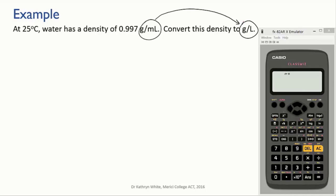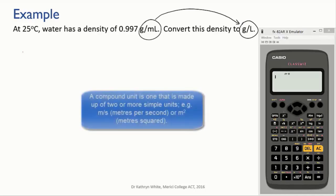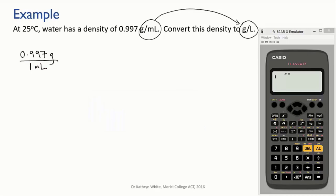Here we're converting from a compound unit of grams per milliliter to another compound unit, grams per liter. This may seem a bit different from our other examples, but exactly the same conversion principles apply.